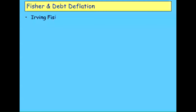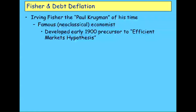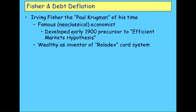Irving Fisher, in my opinion, was the Paul Krugman of his time in several ways. First of all, he was a famous neoclassical economist who developed the early 1900s precursor to the efficient markets hypothesis. Unlike most economists, including Krugman, he was actually practically useful — he was a tinkerer. He was a fan of the teetotal movement, a vegetarian, quite an eccentric personality. He invented the Rolodex — a rotating card system, a mechanical precursor to the iPad — and sold it to the Rand Corporation, getting shares as a result and becoming wealthy in his own right.